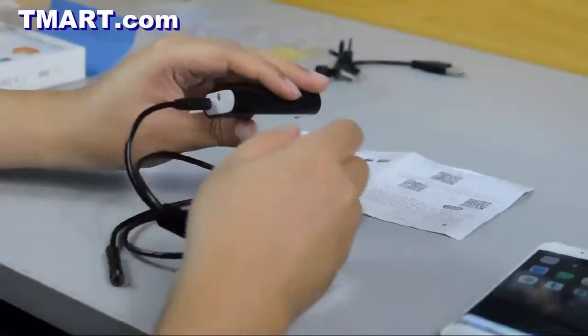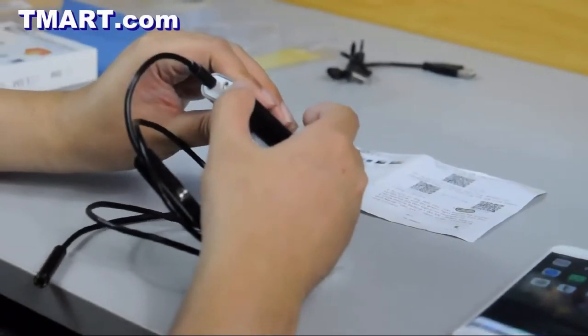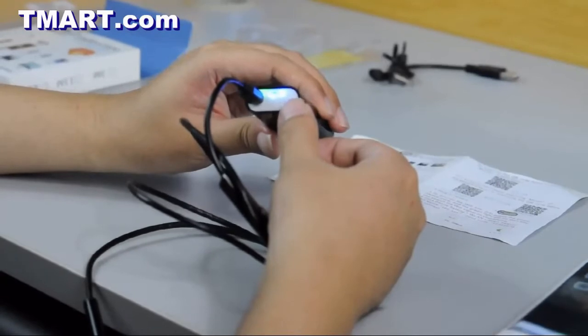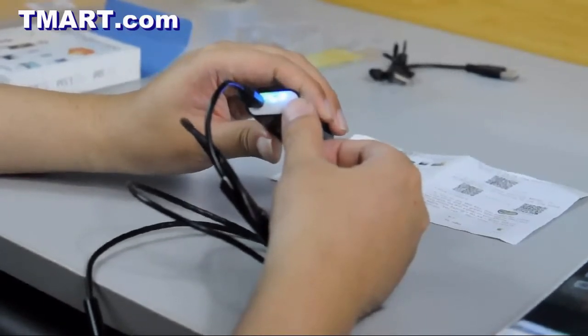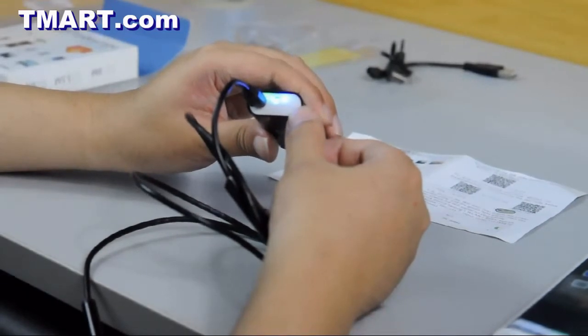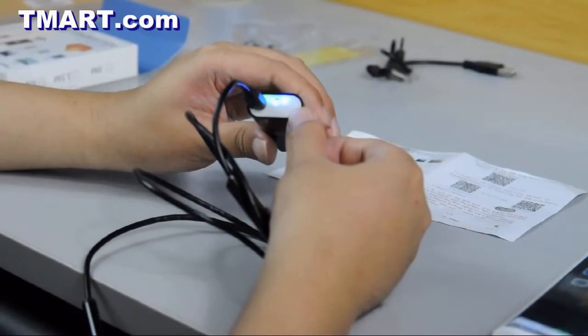Now you can go ahead and turn on the box by pressing the power button. The blue LED is the power indicator and the green one is the Wi-Fi signal indicator. If the device is connected, it will start blinking.